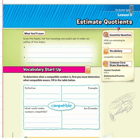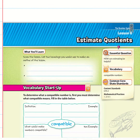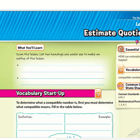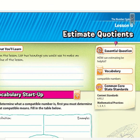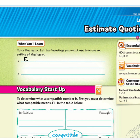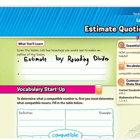Hello everyone, we're in Chapter 3, Lesson 6, page 223 in our sixth grade math books. Today we'll be estimating quotients — we'll estimate by rounding dividends and by rounding divisors.